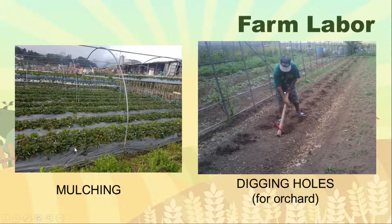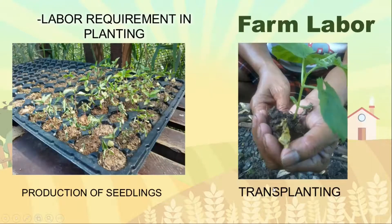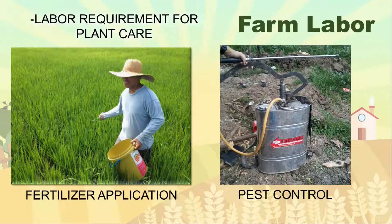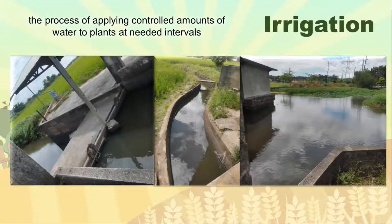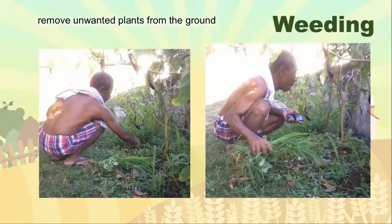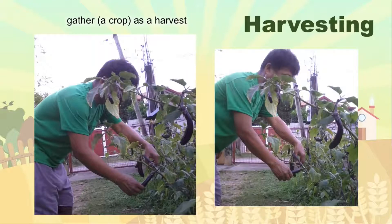We also have digging holes for orchard. For farm labor in planting, we have the production of seedlings and the transplanting. For plant care, we have the application of fertilizer, pest control, irrigation — used to control the amount of water needed for the palayan — and weeding, which is the removal of unwanted plants from the ground. And of course, harvesting — the gathering of our crops. Those are examples of farm inputs and farm labor that we will need in estimation.